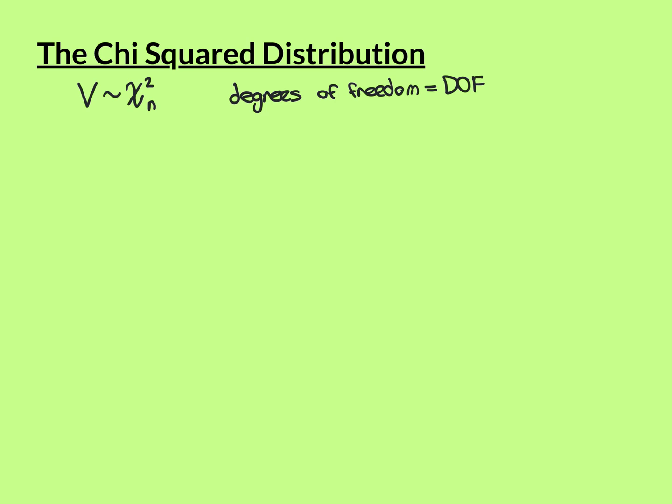In this video I'm going to introduce you to the chi-square distribution. The chi-square distribution is a family of distributions — it's not just one distribution, in the same way that the normal distribution isn't just one distribution. The standard normal is one distribution, but the normal distribution is the whole family of all possible normal distributions.